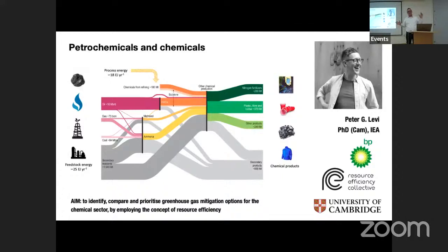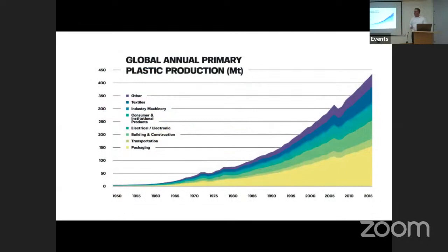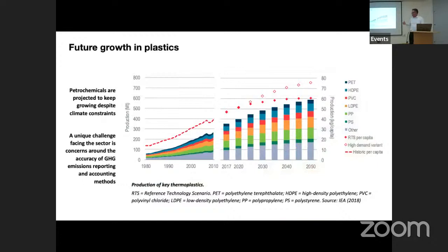Now I want to switch and show some of our research. I'll focus on petrochemicals, chemicals, and plastics. This is Peter Levi, who did a PhD with me sponsored by BP and now works with the IEA. The idea was to map the flow of chemicals through society. Since 1960, we've seen exponential growth in plastics use, with packaging being very large, and roughly a doubling predicted in plastics use out to 2050 — a doubling that we have to decarbonize.